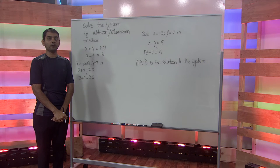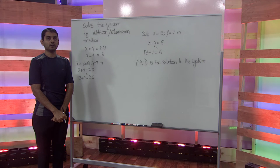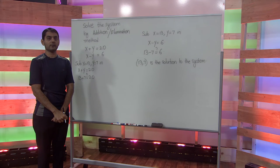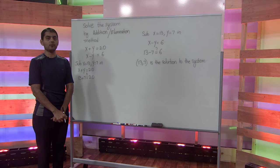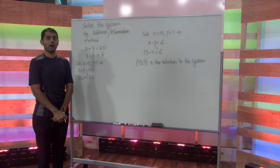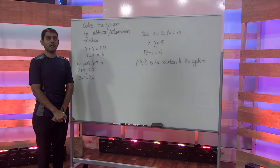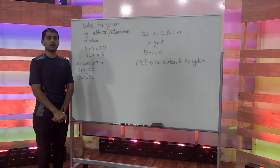To summarize, we solved the system of linear equations by the addition or elimination method. The system was given in standard form and the coefficients of the variable y were opposite, so we added the two equations to find x. Using the value of x, we found the value of y. Finally, we checked that x equals 13 and y equals 7 satisfies both equations in the system.